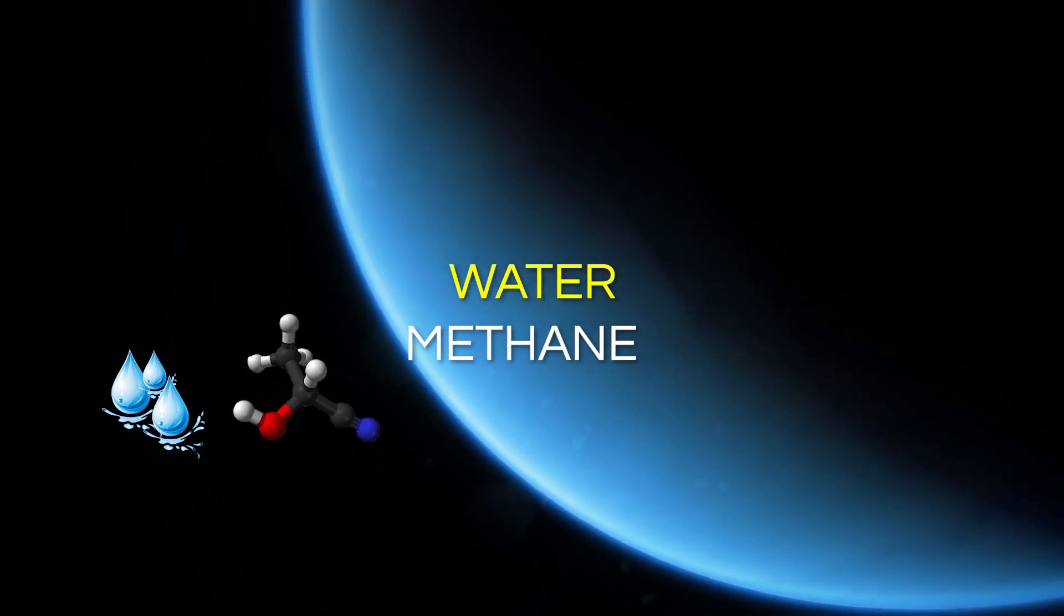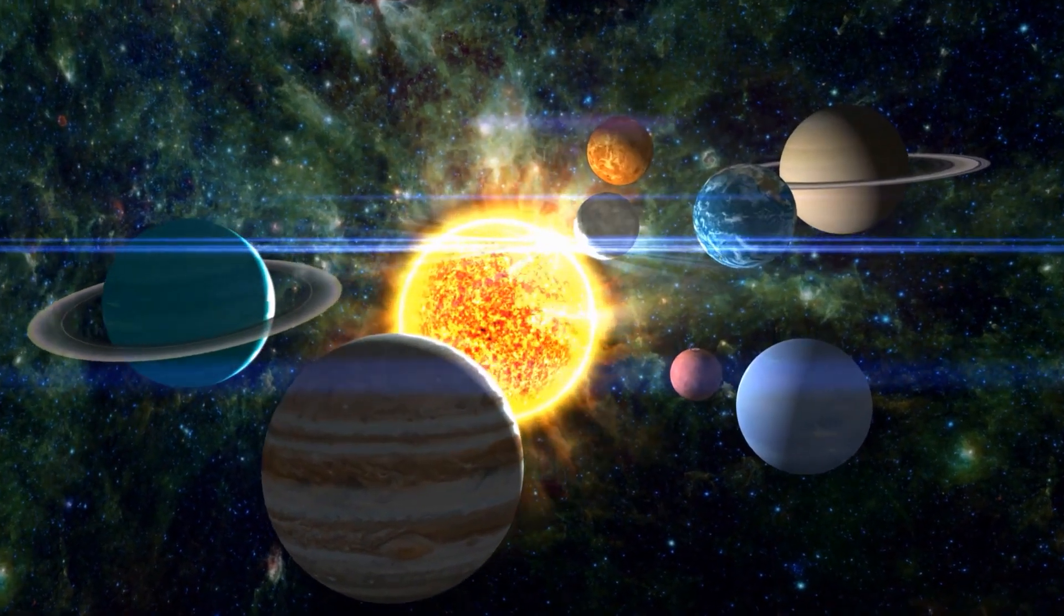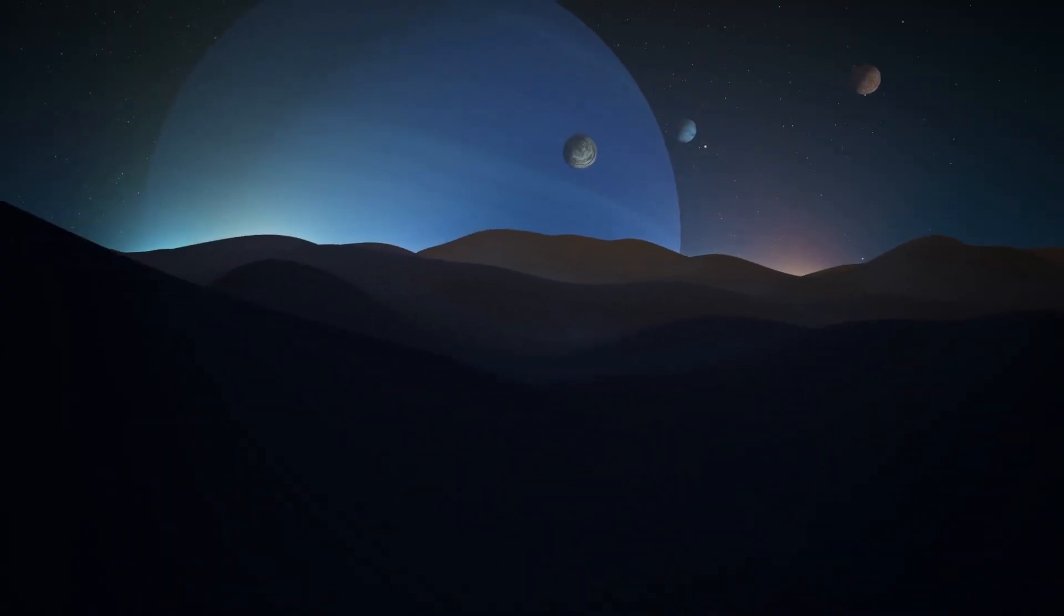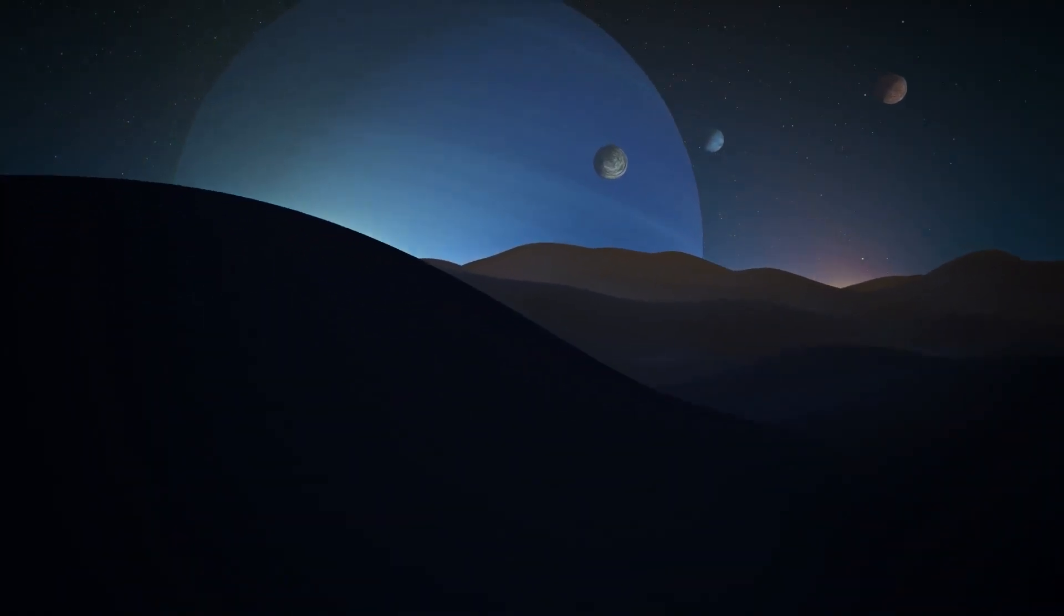Neptune, composed predominantly of water, methane, and ammonia, mirrors its fellow ice and gas giants in lacking a solid surface, instead welcoming us into an ethereal realm where its atmosphere plunges deep into its core.